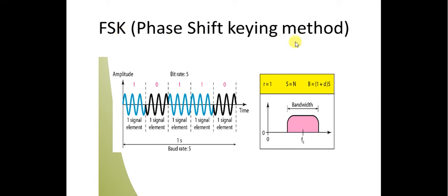In the phase shift keying method, the phase will only change. The phase means the direction. Here the amplitude and frequency will be the same. Only the phase will be changed. You can see that the phase will be changed by 180 degrees.